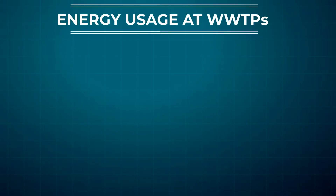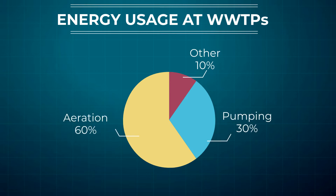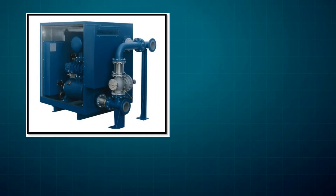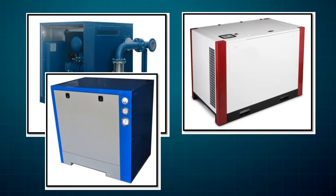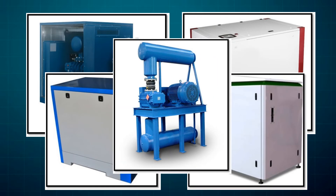Energy is the largest component of operating costs at most wastewater treatment plants, and aeration equipment is by far the largest power consumer. So even a modest improvement in blower system efficiency can significantly reduce operating expenses. Even with advances in blower technology, system efficiency gains have been modest.